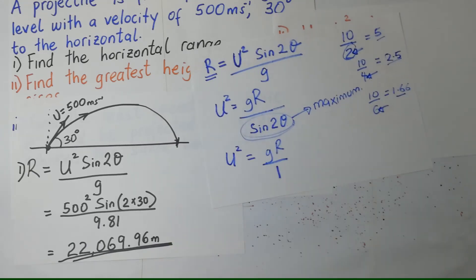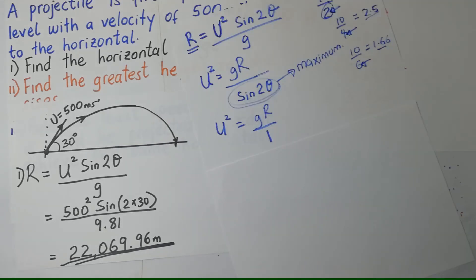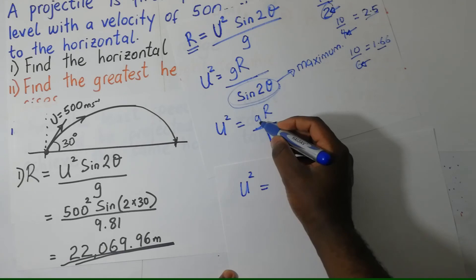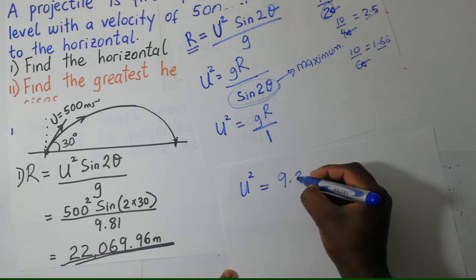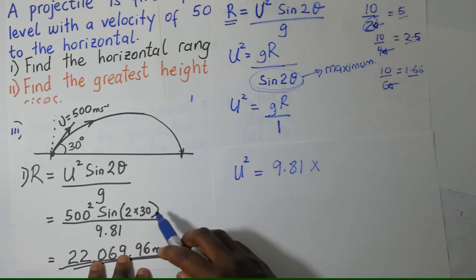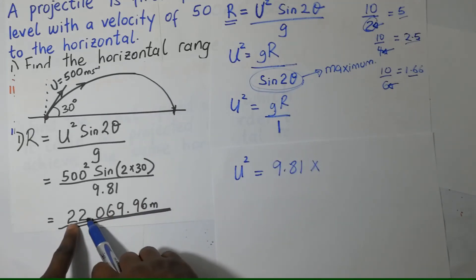So, moving on with our calculations. Our U squared is giving us G, which is 9.81, multiply that by the value of R, the range. In this case...